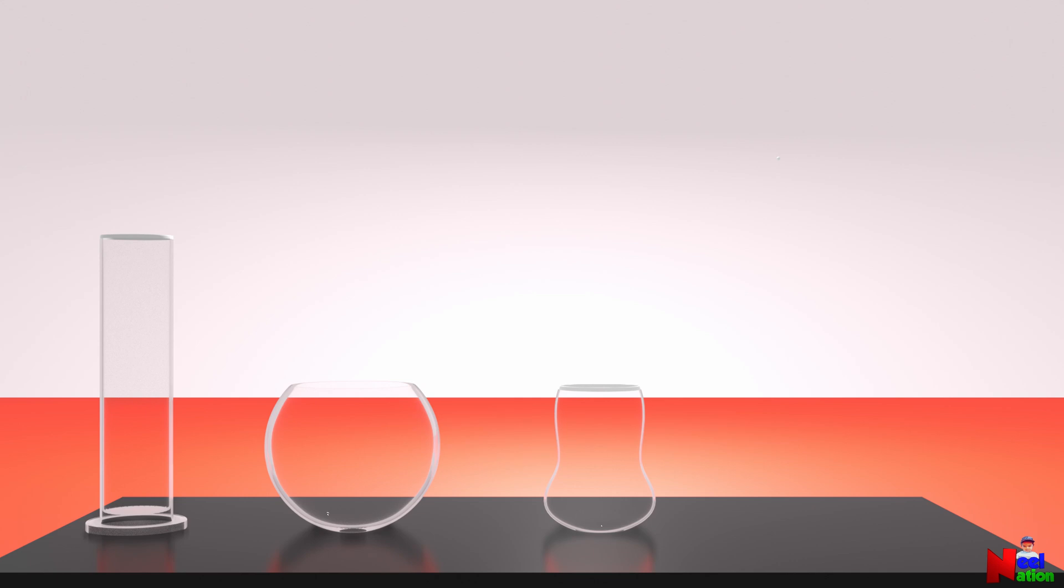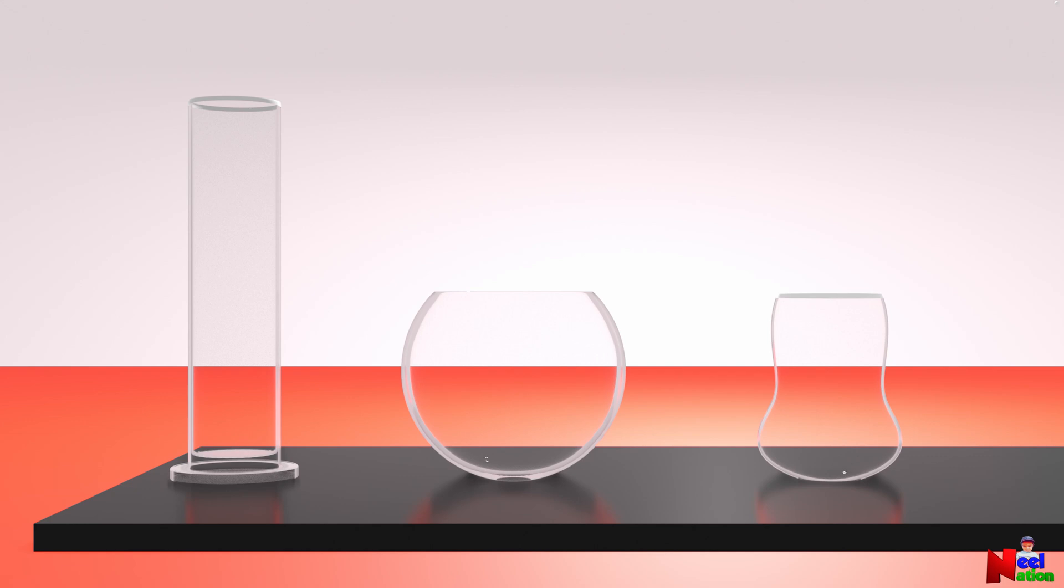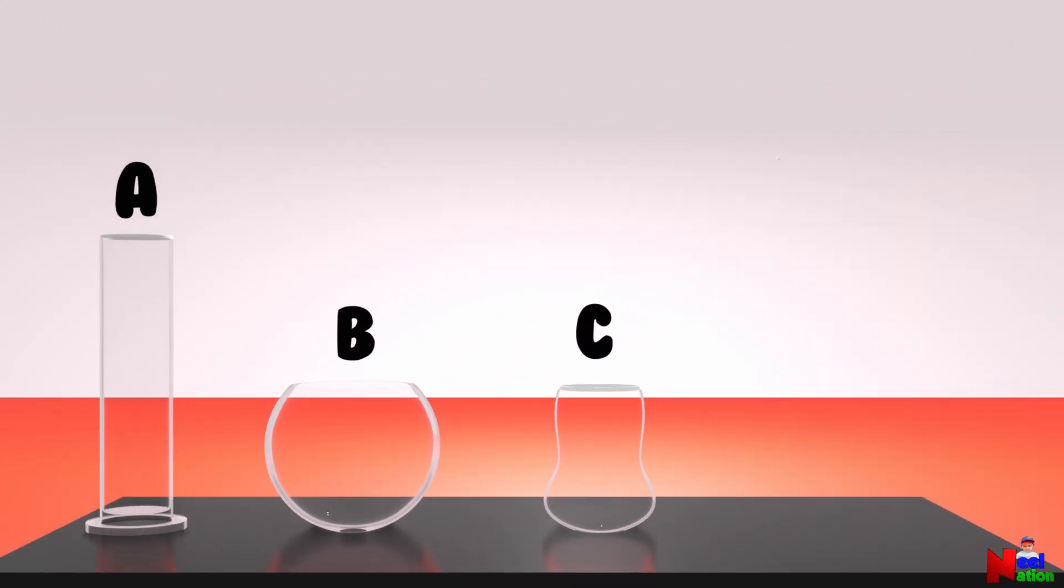Here, we have three containers with different sizes and shapes. Let's name the tall and skinny container as container A, the short but rounded container as B, and the short and thin container as C. Which container do you think has the highest volume? Container A. Let's find out.